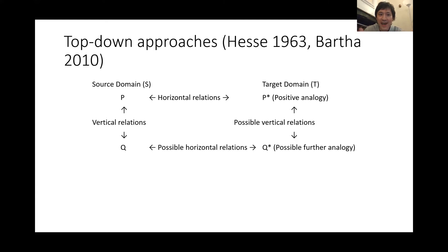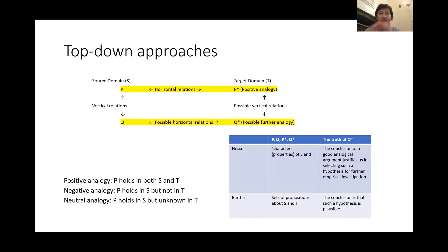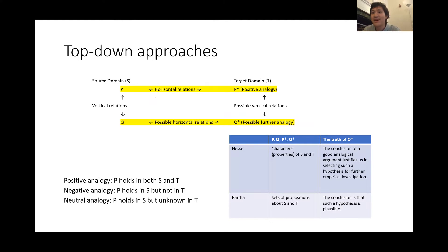Philosophers analyze analogical arguments by this model. Now we have source domain and target domain, P, P-star, Q-star, and also horizontal and vertical relations. For Hesse and Bartha, they differ in their interpretations of these letters P, P-star, Q-star. For Hesse, P, Q, P-star, Q-star are what she called characters of S and T — properties of the domain or objects S and T. For example, the smell of a chemical element can be regarded as P.